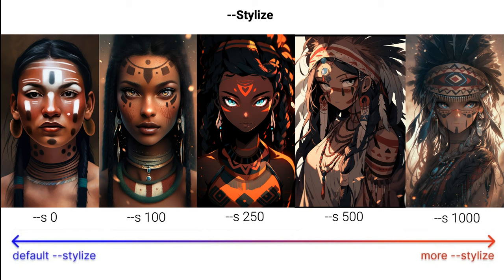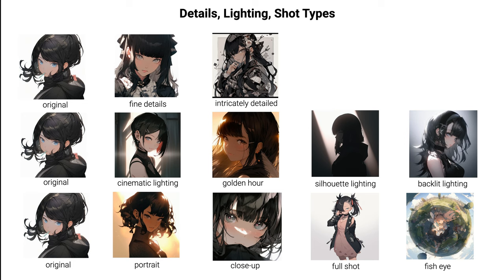The default Niji and Mid-Journey styles are gorgeous, but the problem is they're also quite generic. Use the stylize command to get more interesting variations. The range is 0 to 1000 and the default value is 100. In my explorations, I get the best results around 250 and 500, but it really depends on your own taste. If you want to increase the dramatic impact of your images, you can play with amount of details, lighting, and camera controls.